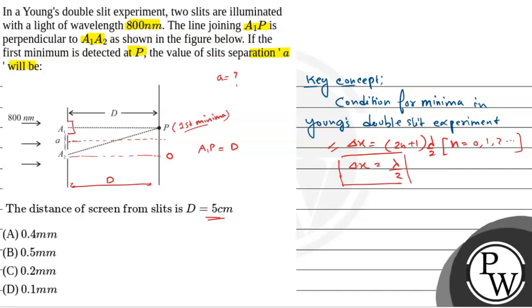We will use triangle A2OP. So from this triangle using Pythagoras theorem, A2P will be what? Root over of d square plus a square right? This is a slit separation between the slit that is a and this is d.